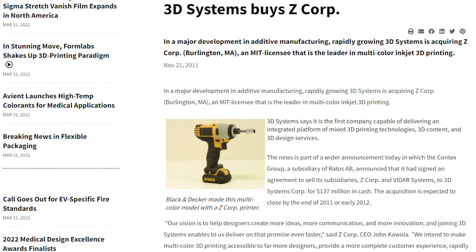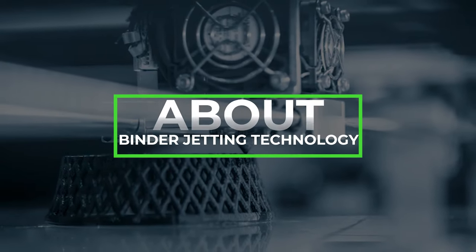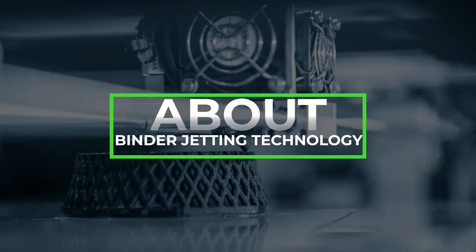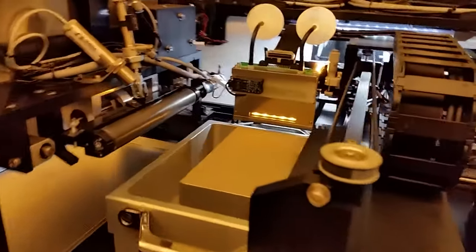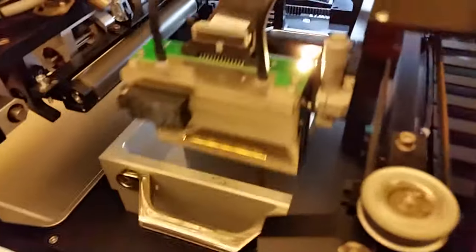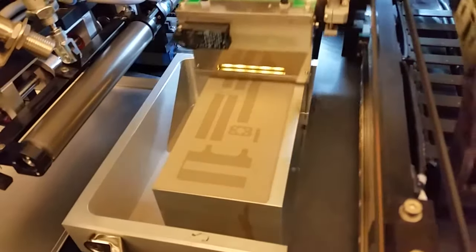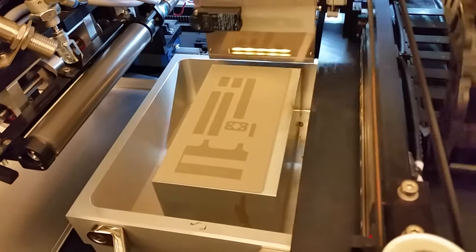Binder jetting is a 3D printing technology that involves layer-by-layer application of a binder onto bulk material. Using this technology you can print with metal powder, gypsum, sand, and many other materials.